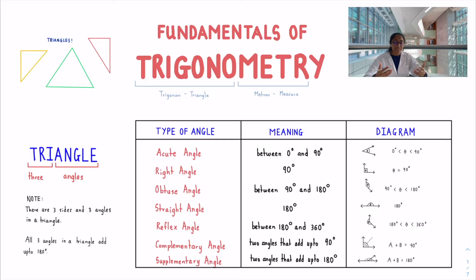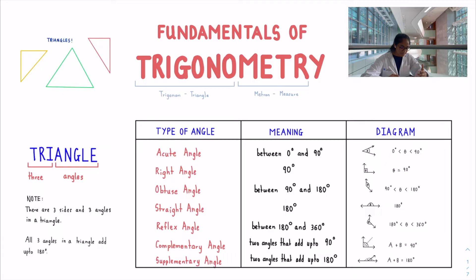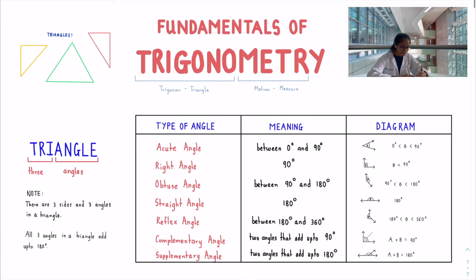Triangles have three angles and three sides. The first thing you should know is that all angles in a triangle add up to 180 degrees — no matter the type of triangle, isosceles, equilateral, things like that. It does not matter; as long as it's a triangle, those three angles will add up to 180 degrees.